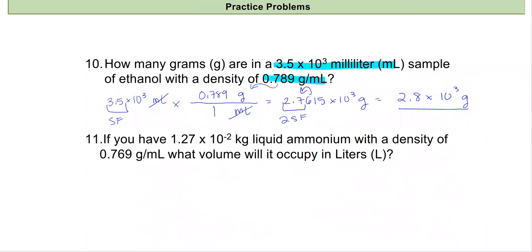And let's look at the second problem we have here. We're going to start out with 1.27 times 10 to the negative 2 kilograms of our liquid ammonium. We know the density and we want to convert into liters. And since I have my density units in grams per milliliter, I really need to be in grams. So I'm going to need to use a few other conversions here to help me with my density units: 1 kilogram equals 1,000 grams and 1 liter equals 1,000 milliliters.